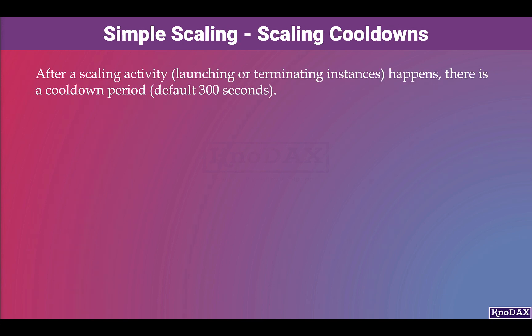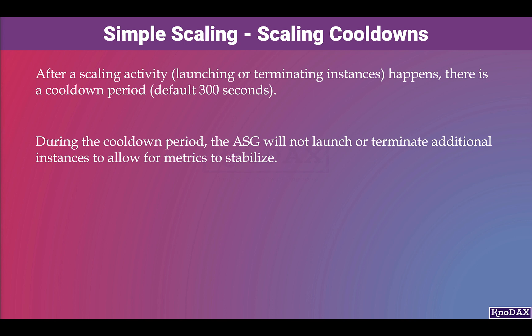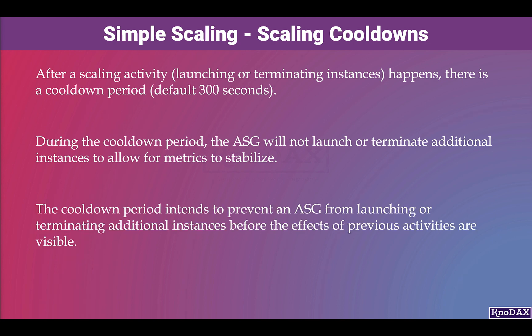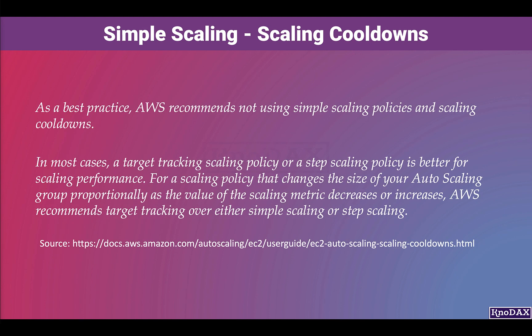Let's talk about cooldown and simple scaling. In simple scaling, after a scaling activity happens, there is a cooldown period — the default is 300 seconds. During the cooldown period, the auto scaling group will not launch or terminate additional instances, to allow metrics to stabilize. The cooldown period is intended to prevent an auto scaling group from launching or terminating additional instances before the effects of previous activities are visible. As a best practice, AWS recommends not using simple scaling policies with scaling cooldowns. In most cases, a target tracking scaling policy or a step scaling policy is better for scaling performance.